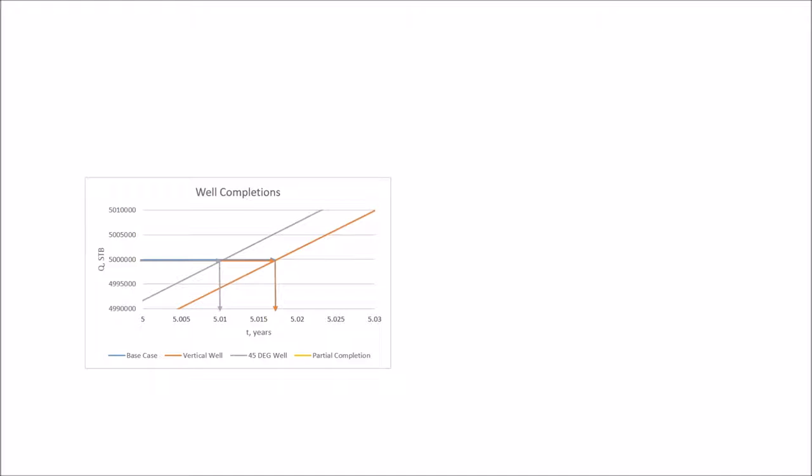All but the partial completion reaches 5 million stock tank barrels at some point. So the question now is, when do the different completed wells reach this volume? If we take a closer look, it's still nearly impossible to distinguish the base case well from the vertical well, since obviously there's only a 6 degree difference between them, so it's still not surprising.